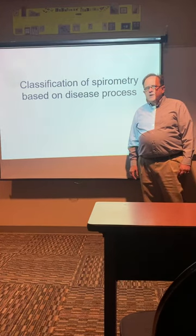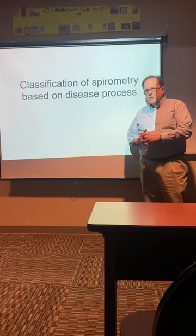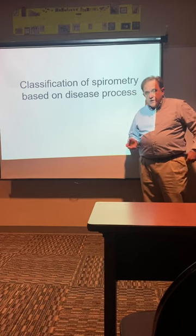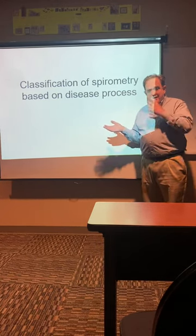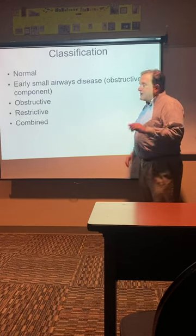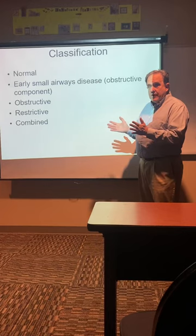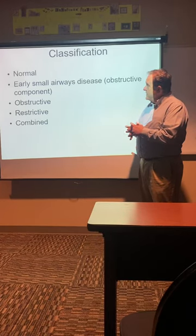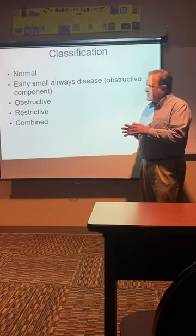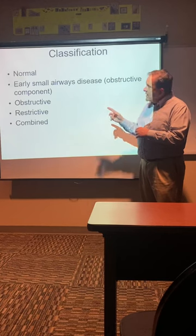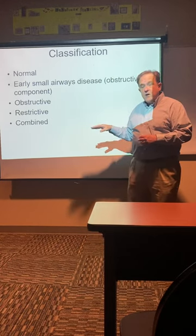Hi there, welcome to video two of PFTs. First we talked about what PFTs were and spirometry, and now we're going to talk about classifying spirometry results based on the values and understanding what kind of disease process that is. There are four categories of disease for NBRC exam that you need to know. Normal, which means all the values are above 75% or 70% as the case may be, and early small airways disease is not really a category but something that's interesting to note. The other three categories are obstructive category with reduced flows, restrictive category with reduced FVC, and combined where you have both reduced flows and reduced FVC.